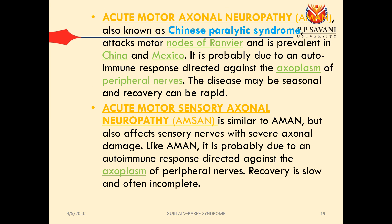The third type is acute motor axonal neuropathy (AMAN), also known as Chinese paralytic syndrome because it is seen more in China and Mexico. It attacks motor nodes of Ranvier and is probably due to an autoimmune response directed against the axoplasm of peripheral nerves. Only and only the motor aspect is affected — it is only motor axons being affected. The name itself gives a clear idea: any abnormality in the nerves related to motor axons is acute motor axonal neuropathy.